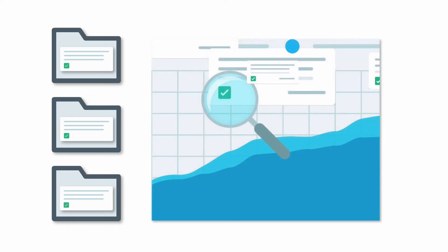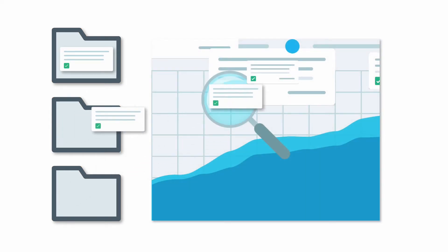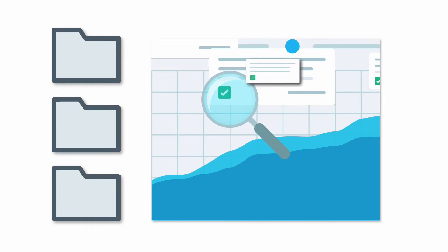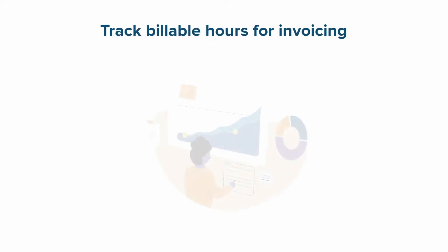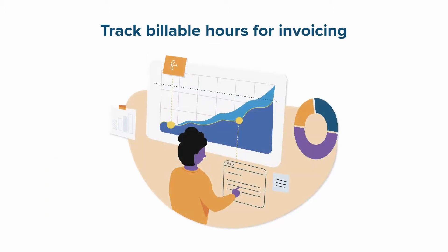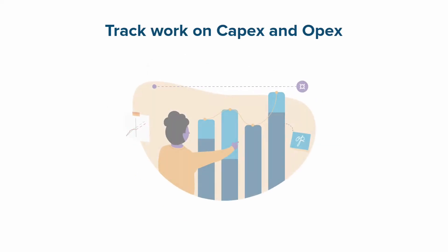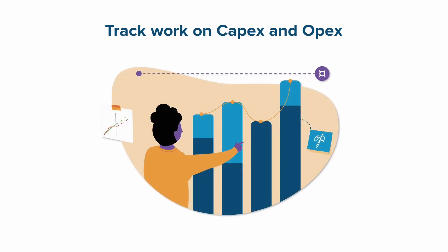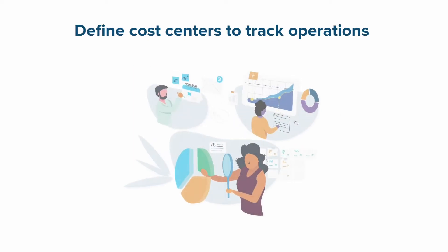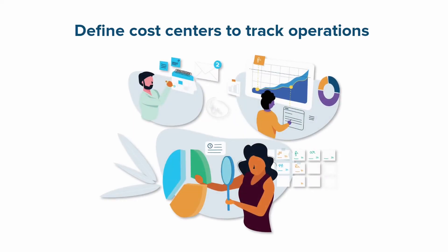The great thing about Tempo Accounts is that you can use them to keep track of and extract this time data for many different reasons, such as to keep track of billable hours for a customer so that invoicing is accurate and reliable, keep track of hours spent on work related to capitalized and operational expenses — referred to as CAPEX and OPEX — and define the cost centers in your company to track their operational efficiency, which helps determine your company's overall profitability.